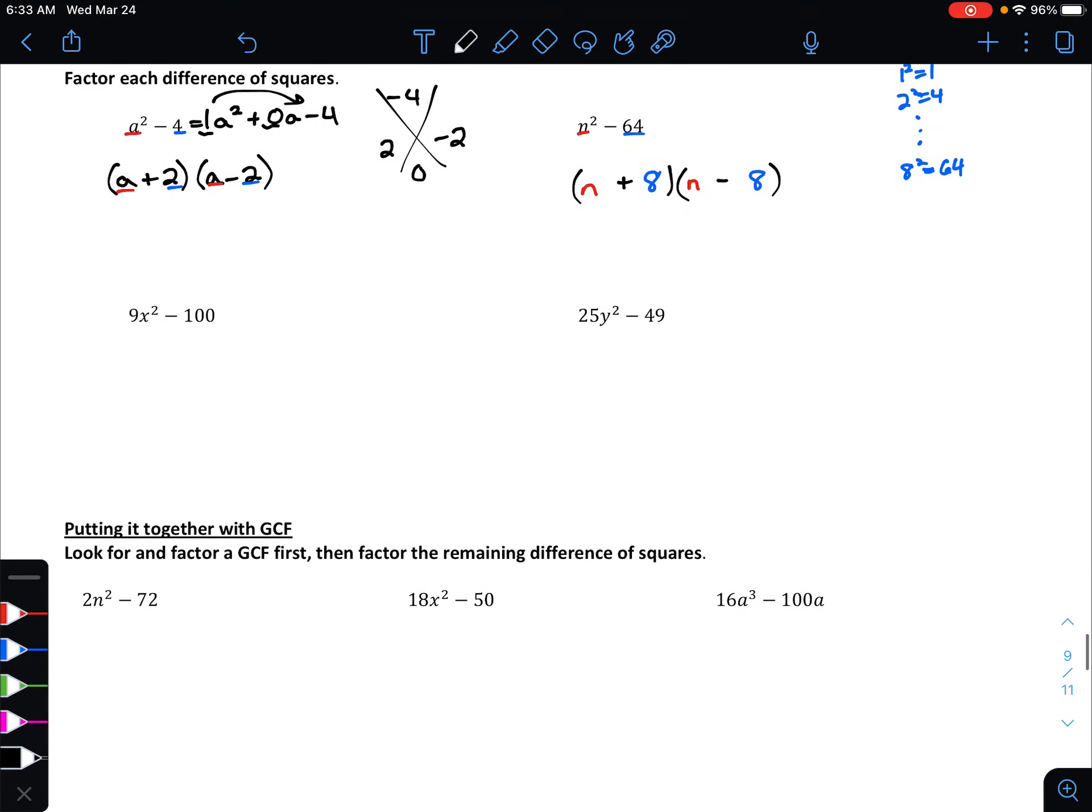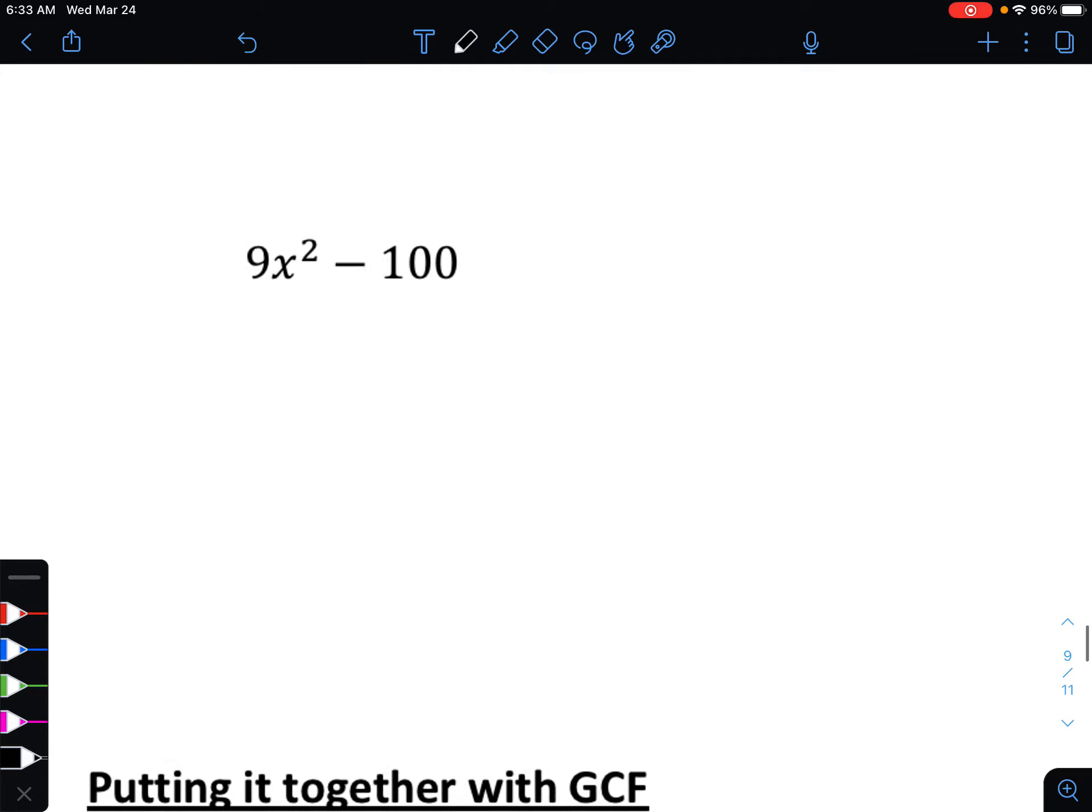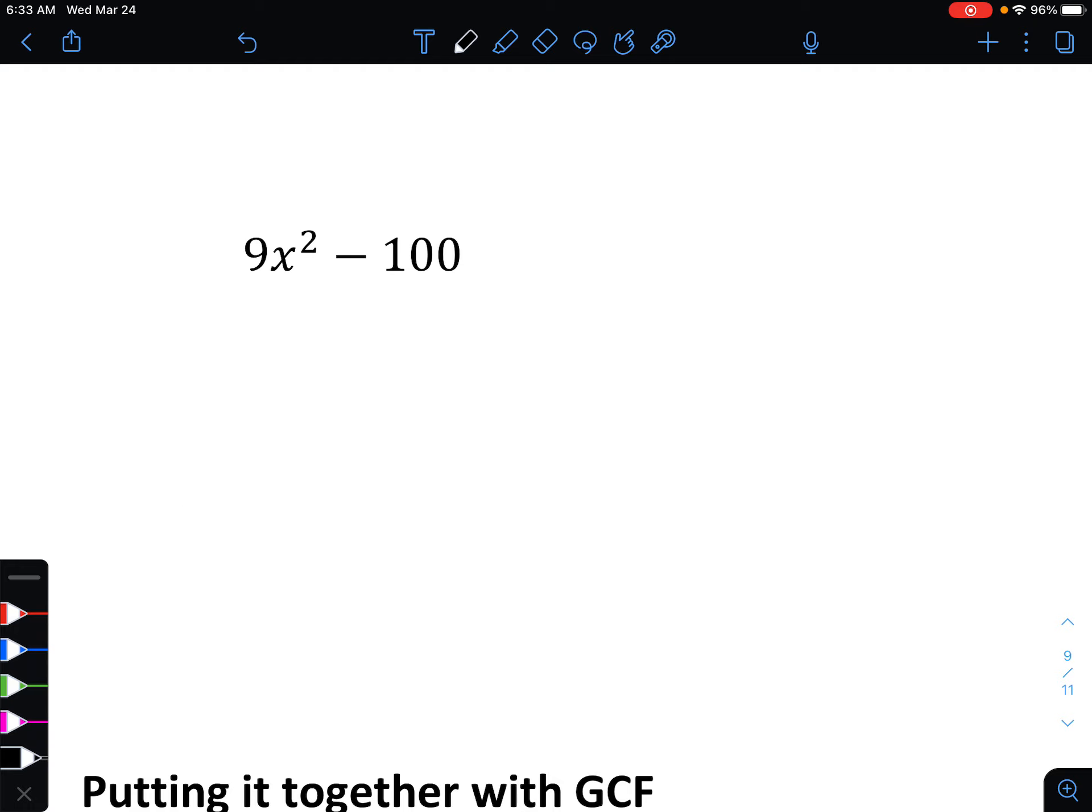All right. Let's take a look at a couple more examples of this, and then we'll put it together with the greatest common factor and see kind of how that works as well. So in this next example, we've got 9x squared minus 100. So let's go piece by piece, starting with the 9, which we'll think of as separately from the x squared. Well, what number is being squared to give us a 9? That would have to be 3. 3 times 3 would give us 9.